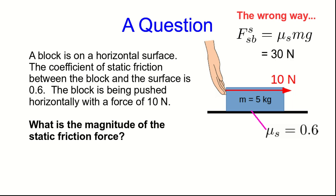And that gives you 30 newtons. No, that is incorrect, because the force of static friction is not mu s times the perpendicular force. That's the maximum static friction. All that's telling us is that whatever the static friction is, it had better be less than 30 newtons.